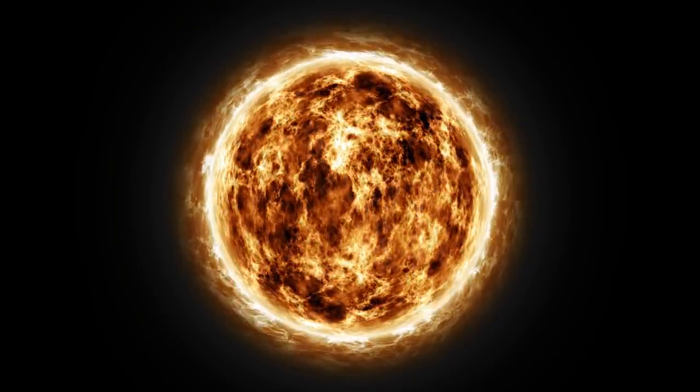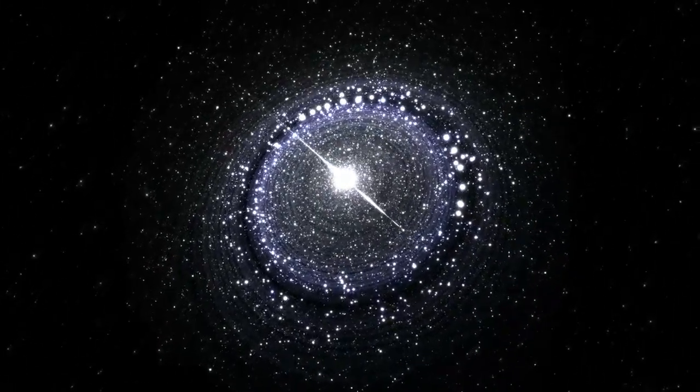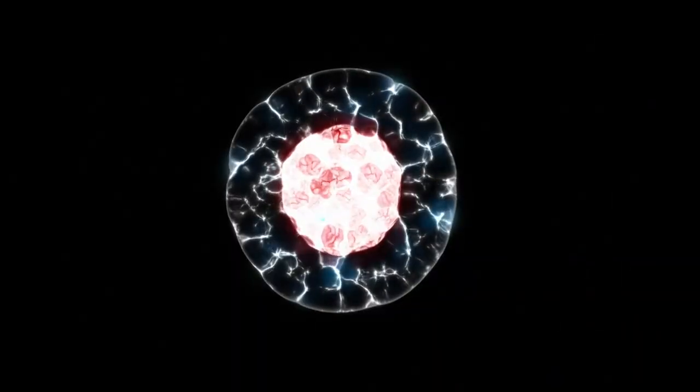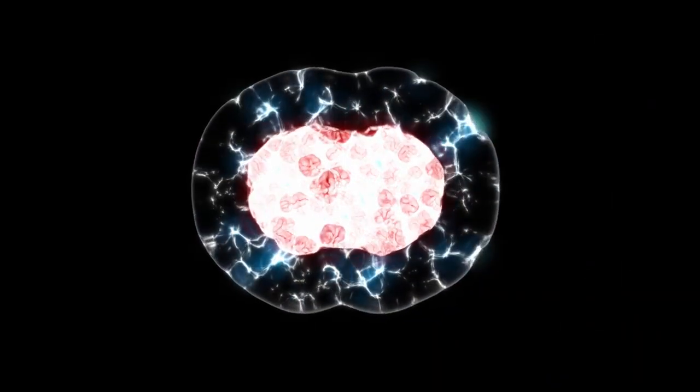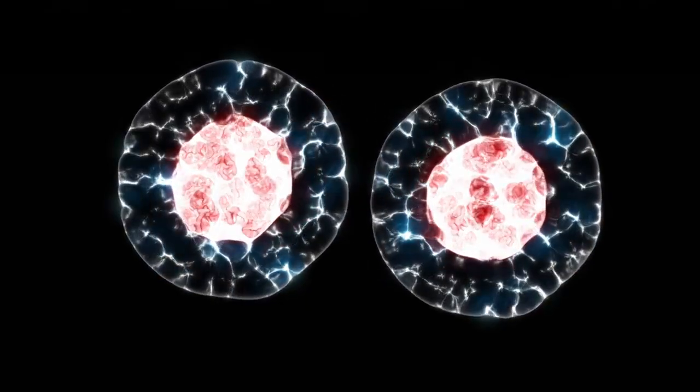During the event, they discovered that Betelgeuse was shedding material from its outer layers at extraordinary speeds, about 200,000 times more than typical solar mass ejections from the sun. This material formed a dust cloud that partially blocked the star's light,